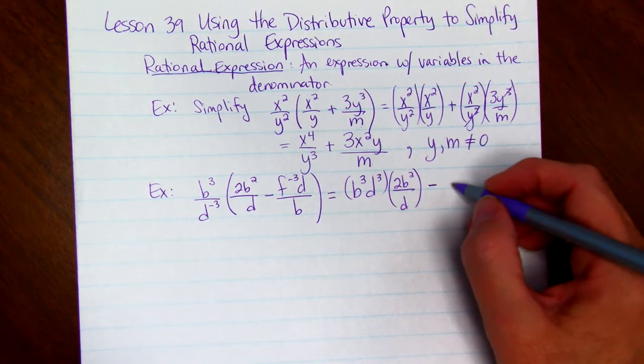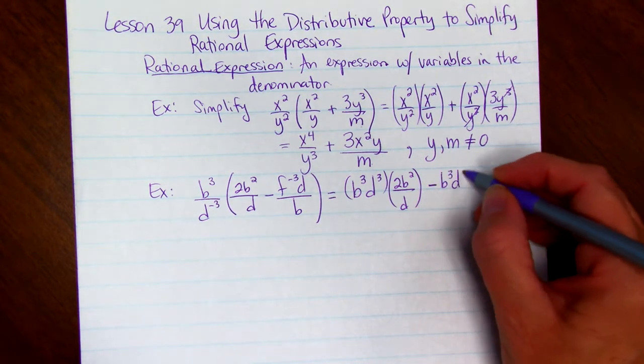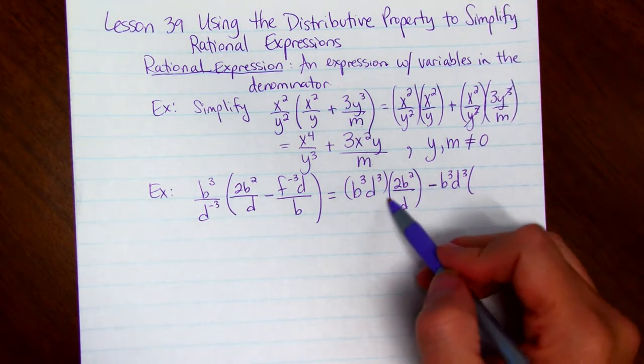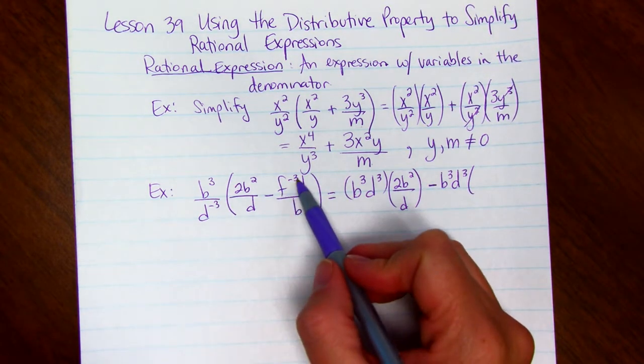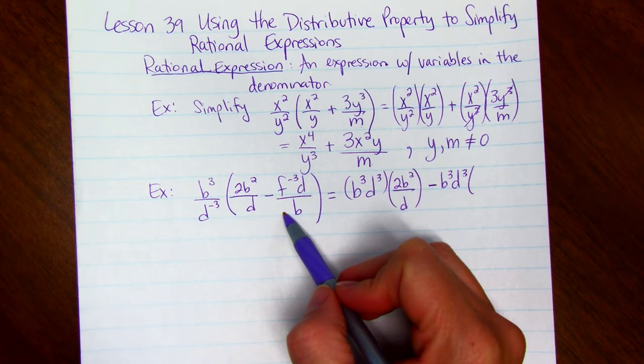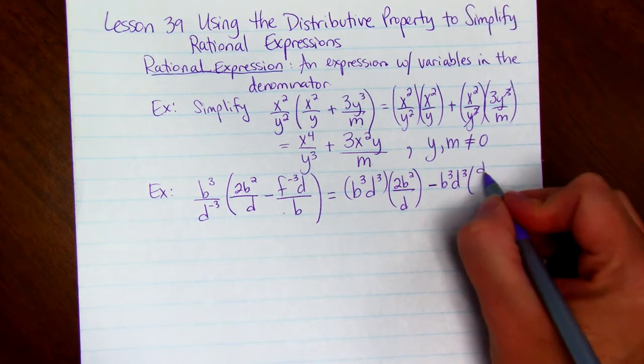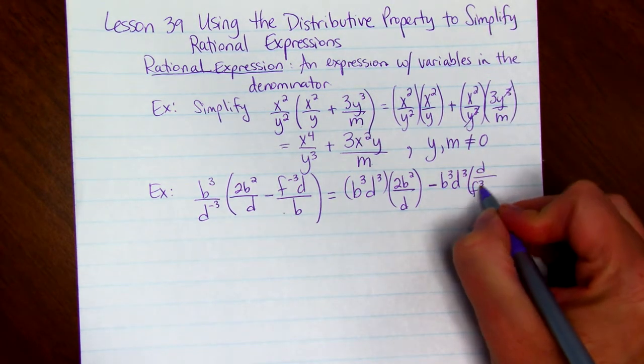Then we subtract b cubed, times, if you notice you have an f to the negative 3rd. That goes down to the bottom to be f cubed. So we're going to have d divided by f cubed b.